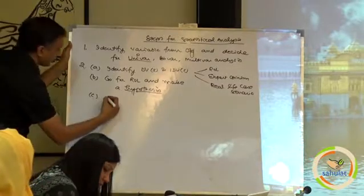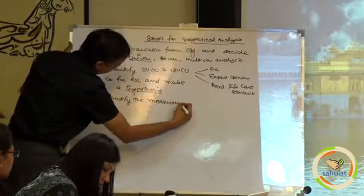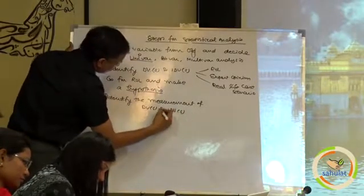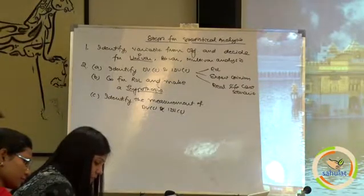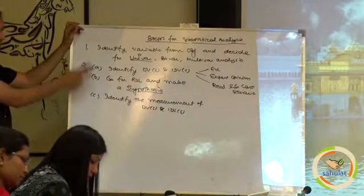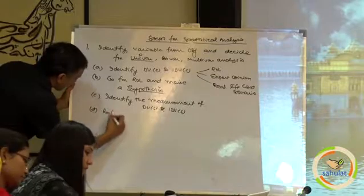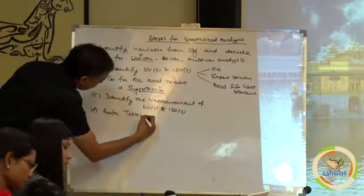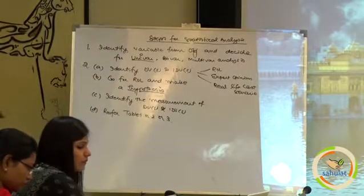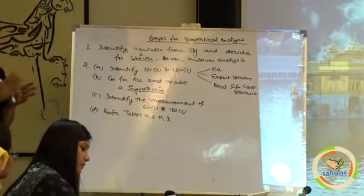Step 2C: identify the measurement of DVs and IDVs. So far we have done only two things — identify how many variables there are and their measurement, that is it. Step 2D: refer to Table 1, 2, or 3, and we will come to that particular table.